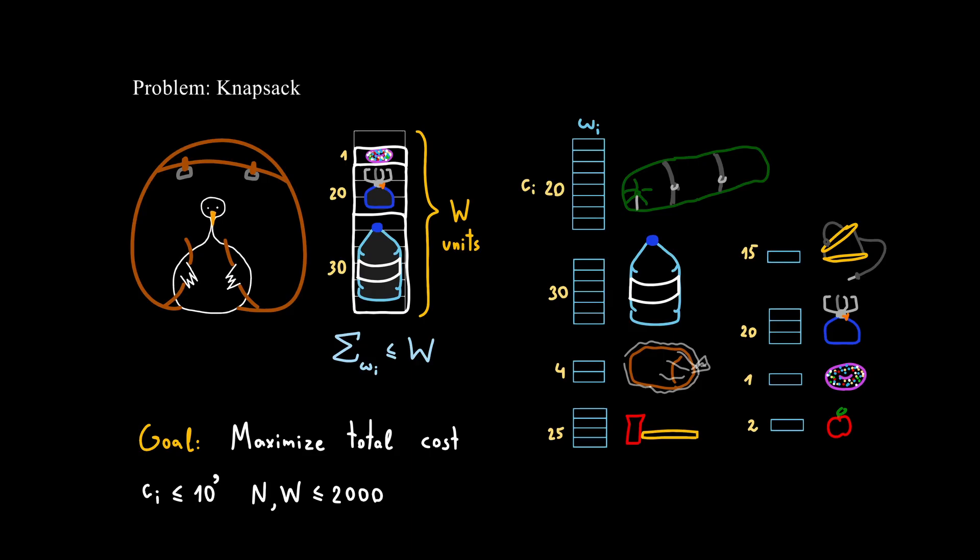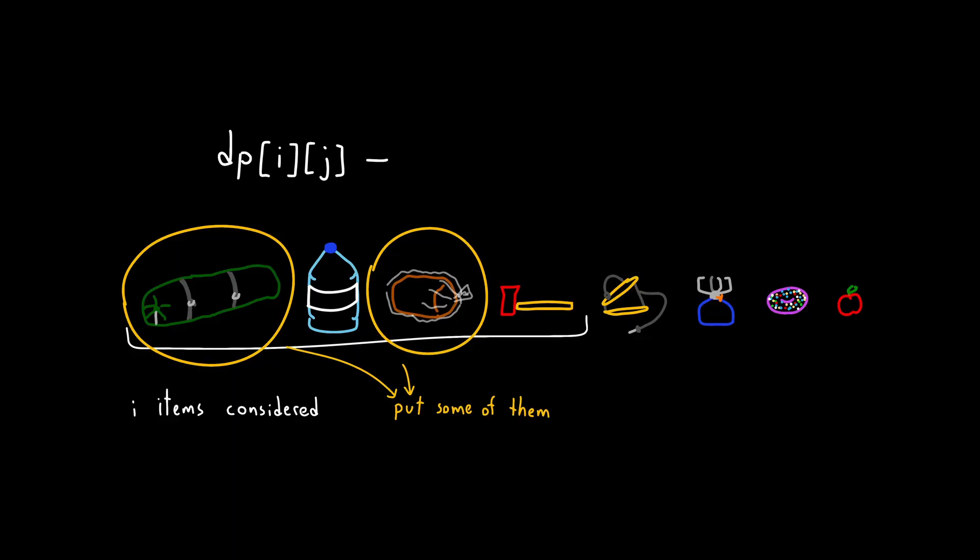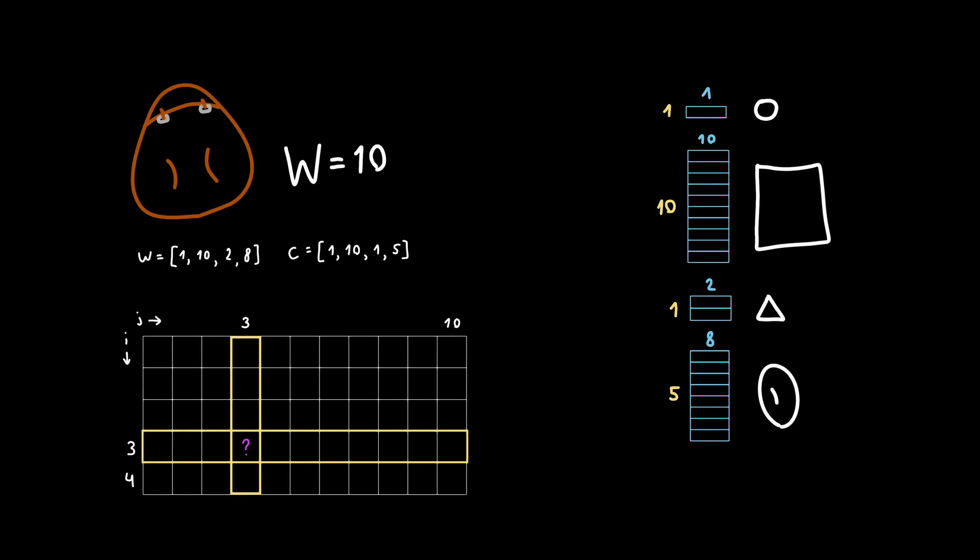Ready? We'll define a DP as follows. DP(i,j) is: after considering first i items, we've picked some of them, such that the total weight is j. The value DP(i,j) is the maximum total cost of those items. Look at this example. What's the value of DP(3,3)? We've looked at first three items. We took some of them with a total weight of 3. In this case, there's only one way to do that: by taking items 0 and 2. The cost that we get is 2. So, DP(3,3) is 2.